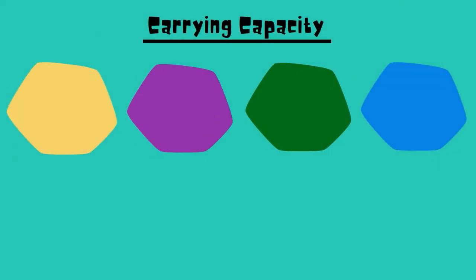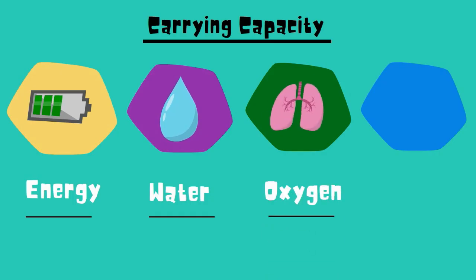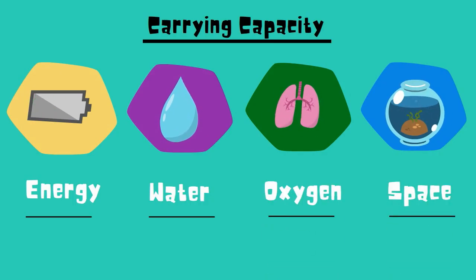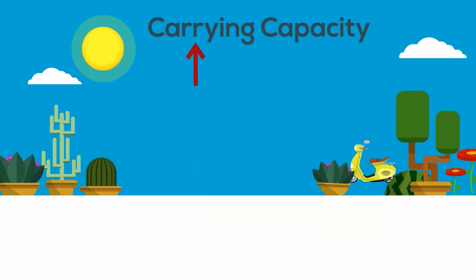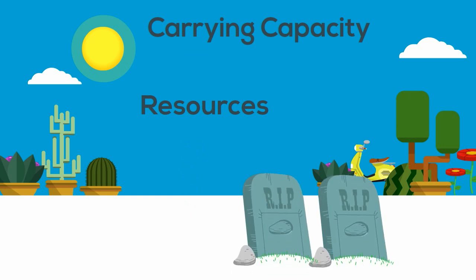Carrying capacity is limited by energy, water, oxygen, and space, which are all limiting factors. As a population nears the carrying capacity, resources become limited, and if a population exceeds the carrying capacity, deaths begin to outnumber births.